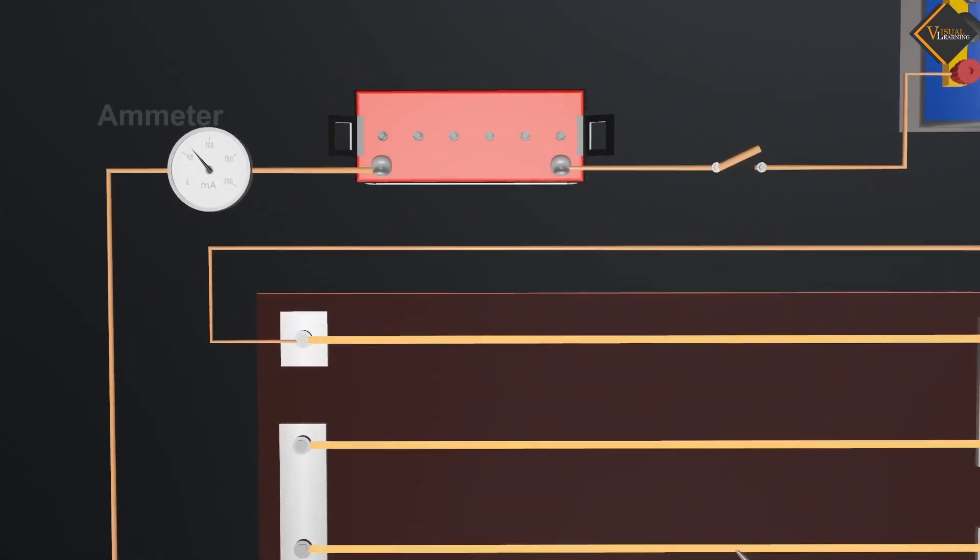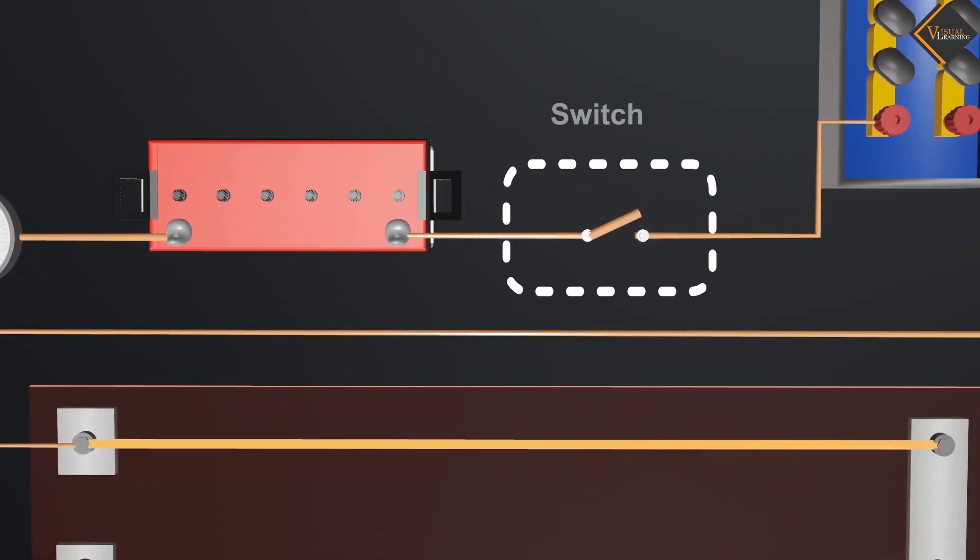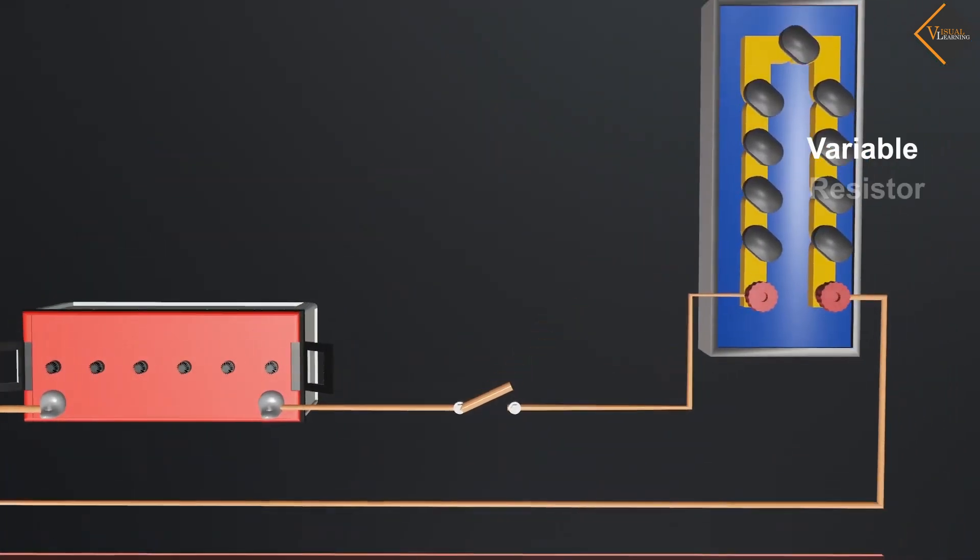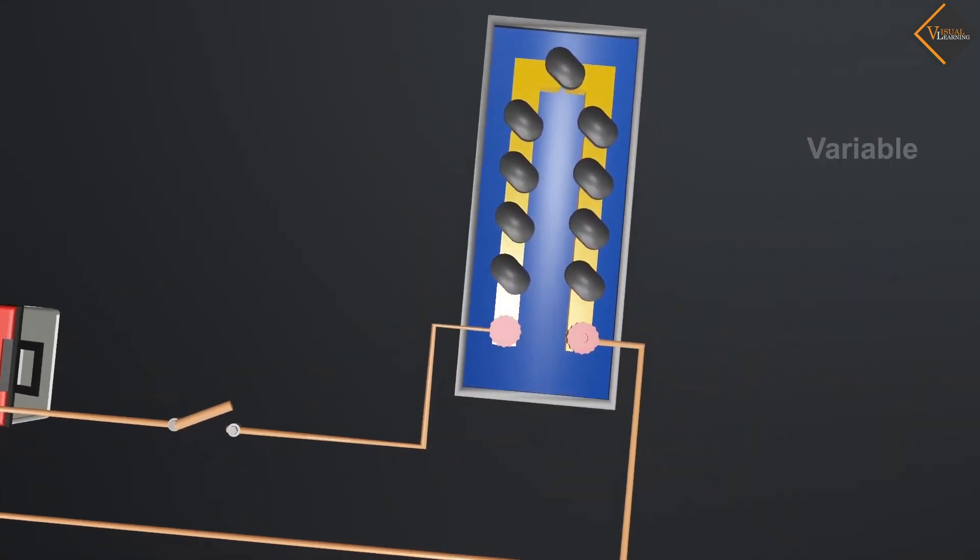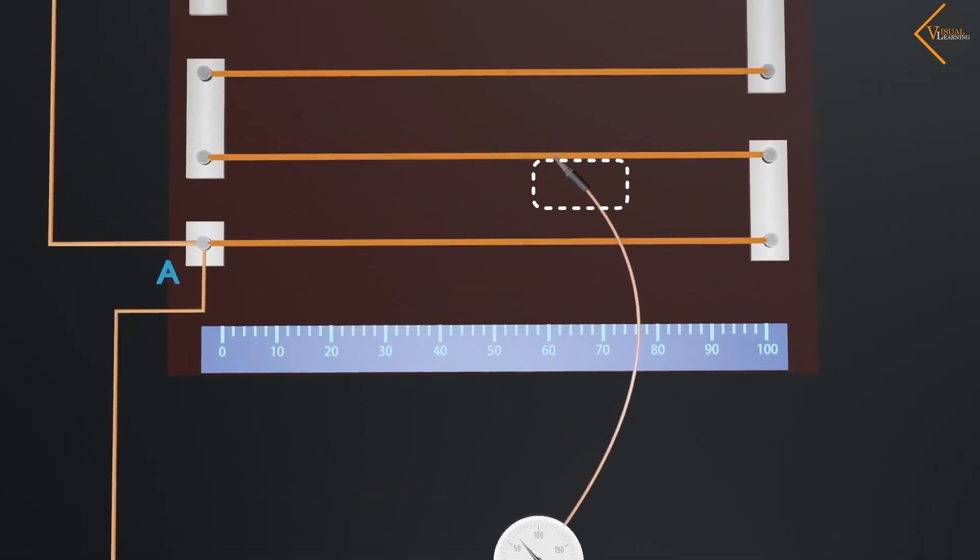In this circuit, an ammeter is used to measure current. To turn off the circuit, a switch is used and a variable resistor to vary the current. A voltmeter is connected to point A using the jockey on the wire.